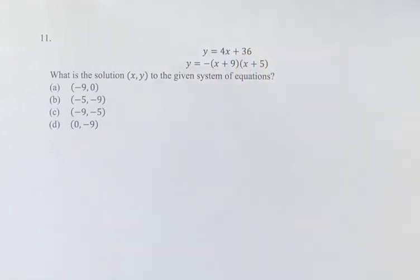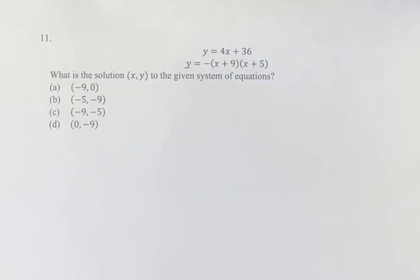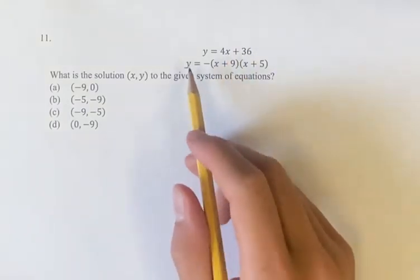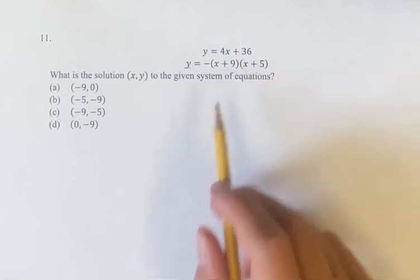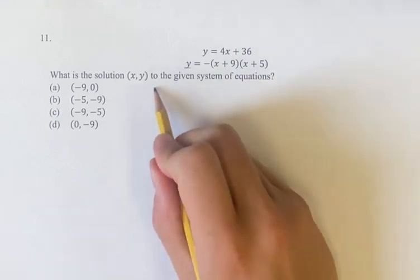This we have a little linear equation, but what we can notice is that both of these have y equals something. And if we know that y equals 4x plus 36 and y equals negative x plus 9 times x plus 5, if y equals both of those things, then they're equal to each other. So we can write down...